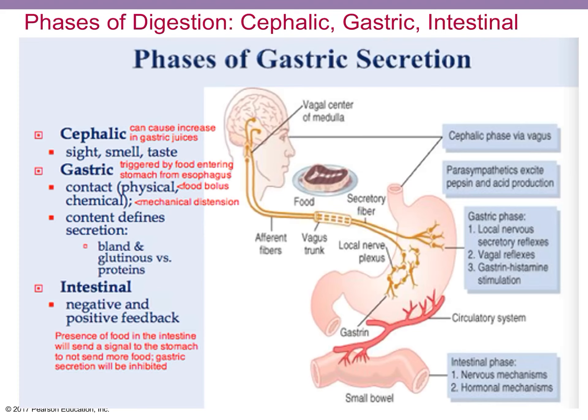The phases of digestion are called cephalic, gastric, and intestinal. It just means there are phases of the eating process. The cephalic phase is the input going into your head — getting excited when you see really good food, smell food, start to taste food, or even think about food. These are all very real inputs to your nervous system, and your nervous system via the vagus nerve primarily can actually start to stimulate motility and secretions from your gastrointestinal tract.